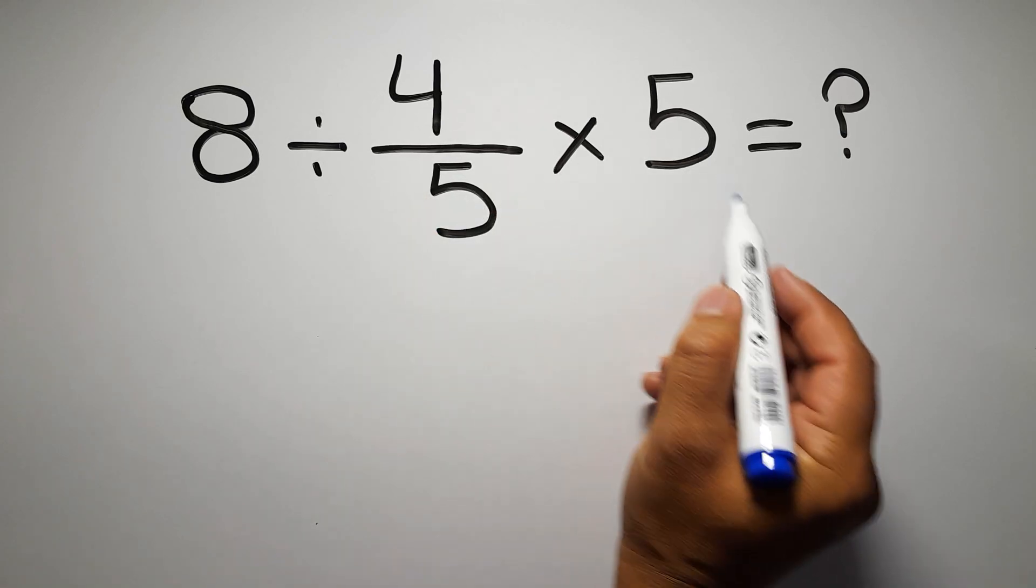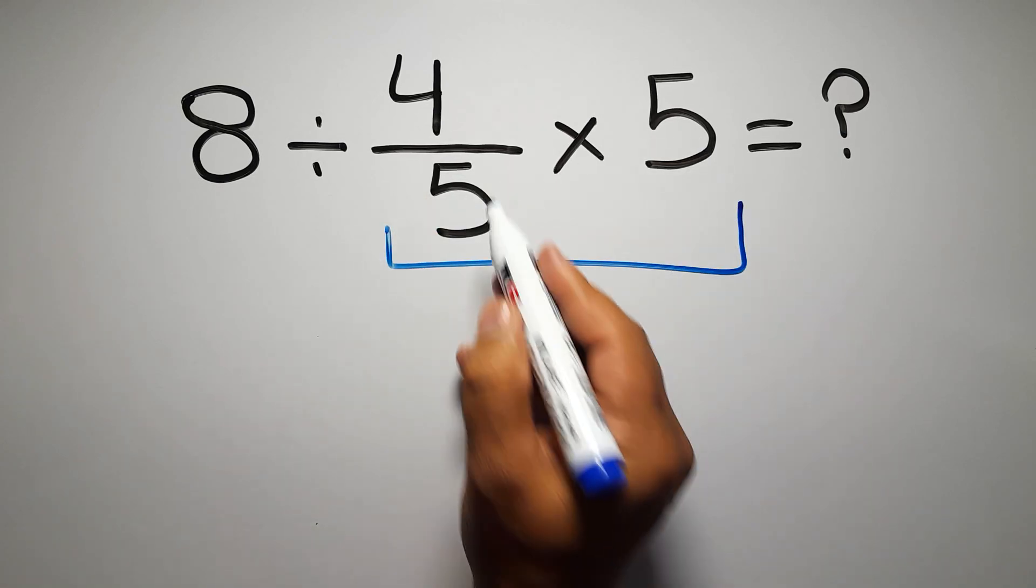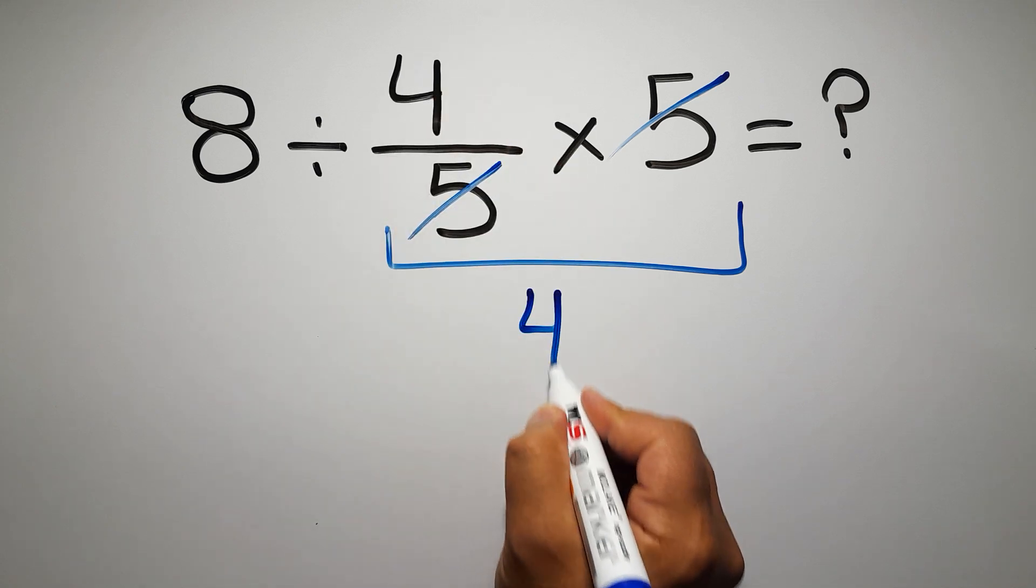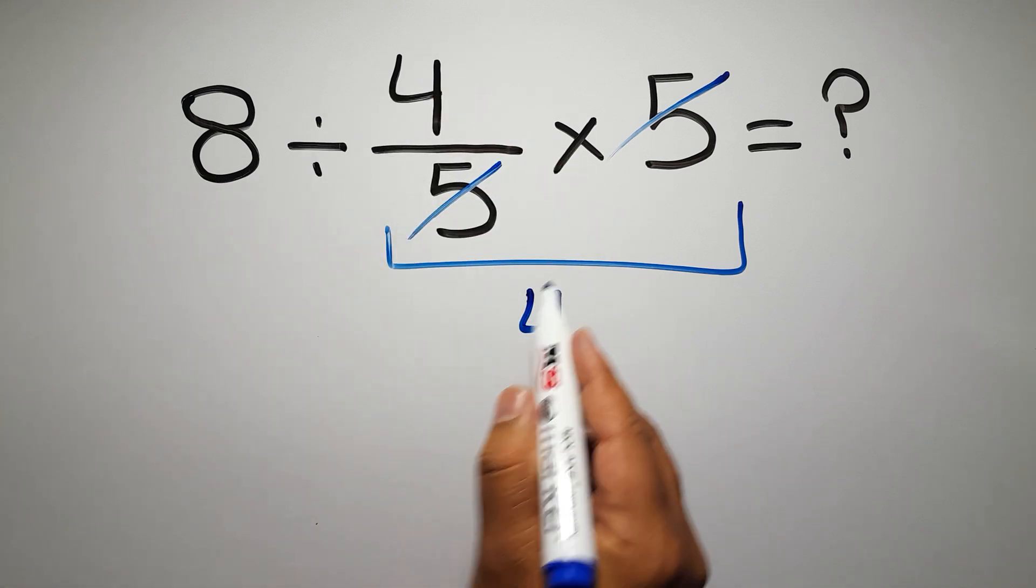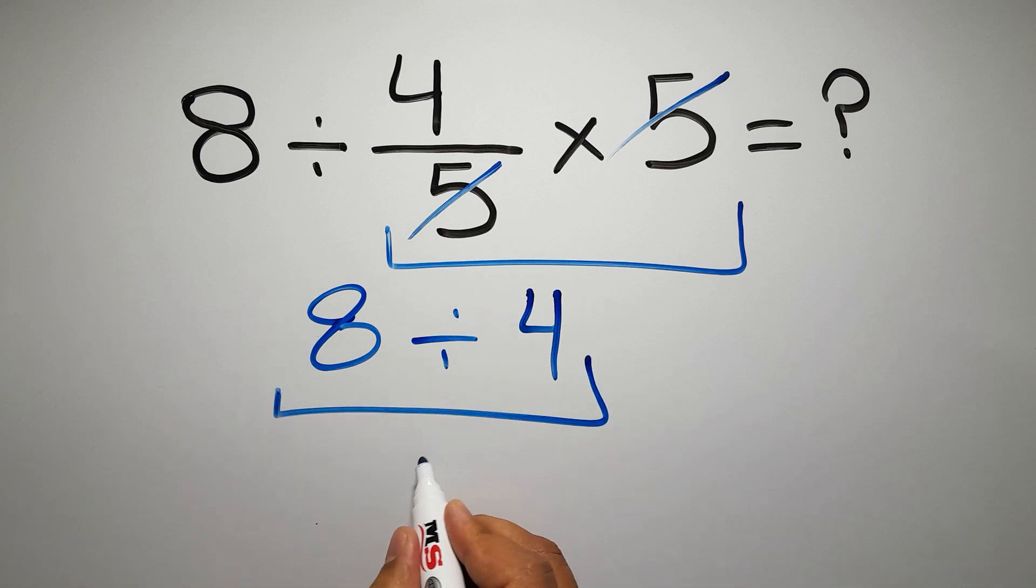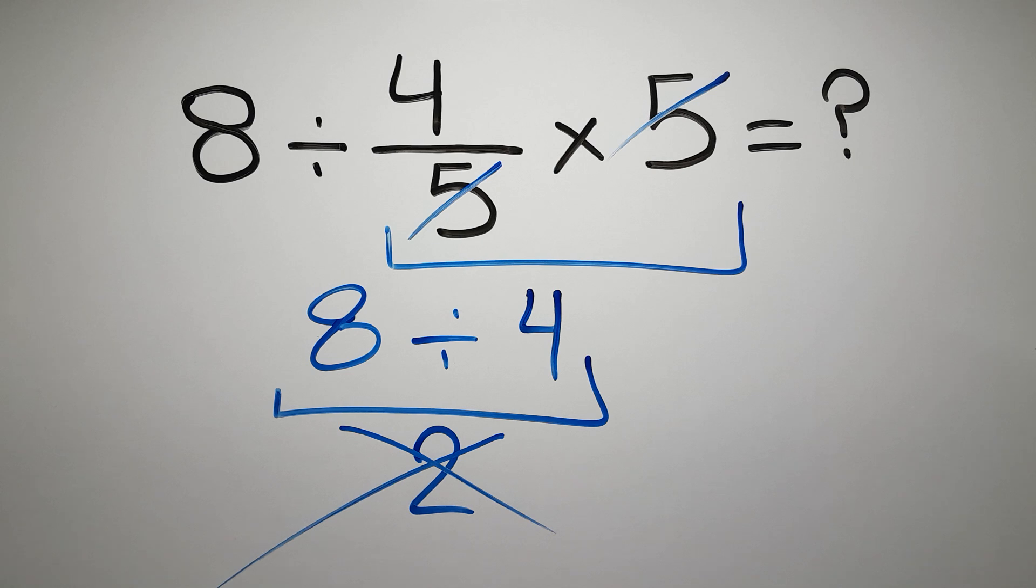4 over 5 times 5, we can easily cancel this 5 and this 5, so we have just 4. And 8 divided by 4 gives us 2, but this answer is not correct because according to